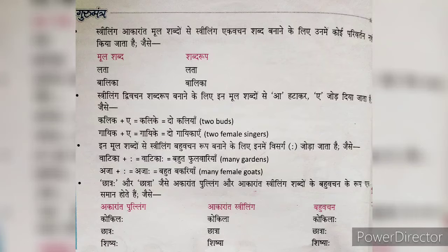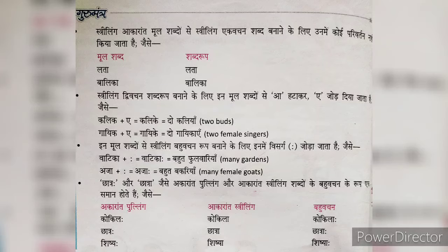Istri Ling द्विवचन शब्द रूप बनाने के लिए इन मूल शब्दों से 'आ' हटाकर 'ए' जोड़ दिया जाता है। जैसे: कली + ए = कलिके (दो कलियाँ), गायका + ए = गायके (दो गायिकाएँ)।